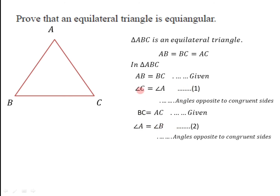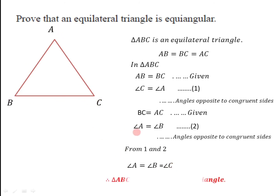From equations 1 and 2: angle C = angle A and angle A = angle B, so all three angles — angle A, angle B, and angle C — are congruent. Therefore triangle ABC is an equiangular triangle. This is what we wanted to prove.